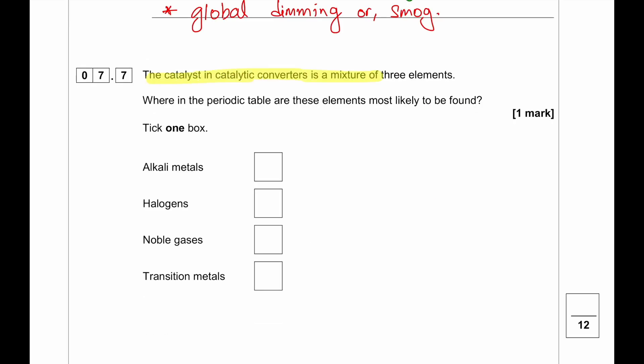The catalyst in catalytic converters is a mixture of three elements. Where in the periodic table are these elements most likely to be found? We are going to find it in transition metals because catalyst consists of platinum, palladium, expensive metals in that particular group, mostly platinum and palladium and the other one. How would you get to this particular answer without knowing that what it is? They are not alkali metals because group 1 metals are alkali metals. They are not halogens because halogens are non-metals. Noble gases are gases, they are non-metals. So transition metals will be the answer. Platinum, palladium, the other one could be probably rhodium. Rhodium is a good one in terms of using as a catalyst.